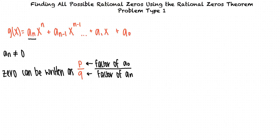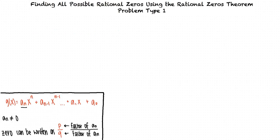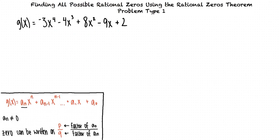This all sounds kind of confusing — how do we relate it to the types of problems we'll be given? Let's say we're given the polynomial g of x equals negative 3x to the 4th minus 4x cubed plus 8x squared minus 9x plus 2, and we're told to list all possible rational zeros using the Rational Zeros Theorem. To do this, we'll first need to identify a sub 0 and a sub n.